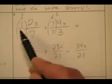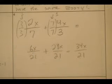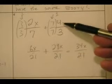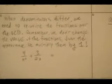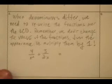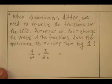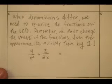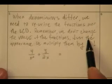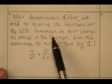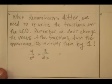Remember, any number times 1 equals itself. This is still 2x over 7 — looks a little different, but this is still 4x over 3. It is still the same ratio. This to this is the same as this to this — still the same value. When denominators differ, we need to rewrite the fractions over the LCD. We don't change the value of the fractions — we just change the appearance. We multiply this fraction by 1.